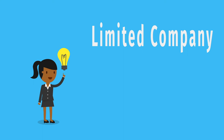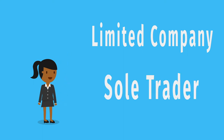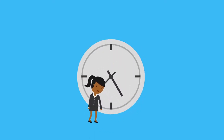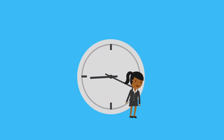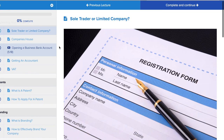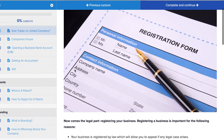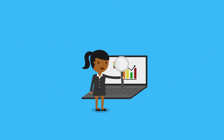Step number three is to register your business. If you are creating a company, it's best to register it as a limited company. The course discusses the difference between a sole trader and a limited company to help you decide. A limited company can last beyond your lifetime and allows other people to invest in it. The course covers this in detail for both the UK and the US.